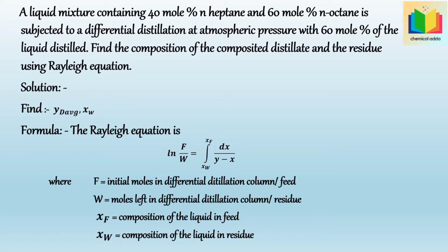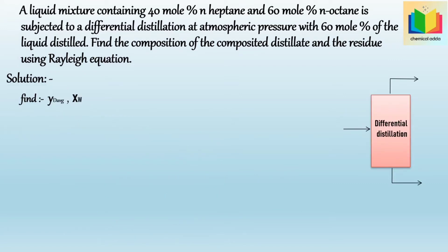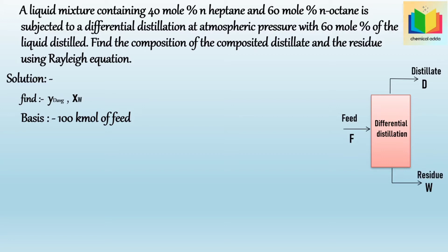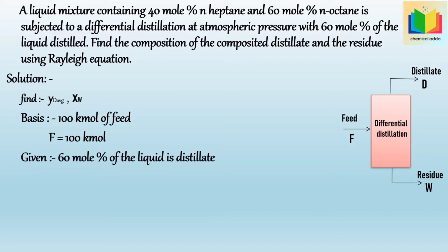The feed contains 40 mol percent N-heptane and 60 mol percent N-octane. Let's take the basis of 100 kilomoles of feed. Let F, D, and W be the feed, distillate, and residue respectively. Hence, F = 100 kilomoles. As we are given that 60 mol percent of the liquid is distilled, we get D = 0.6 × F = 0.6 × 100 = 60 kilomoles.